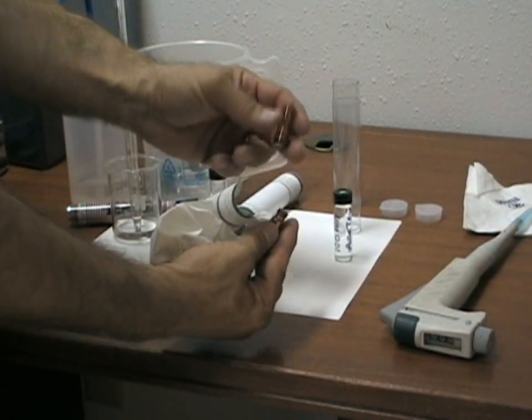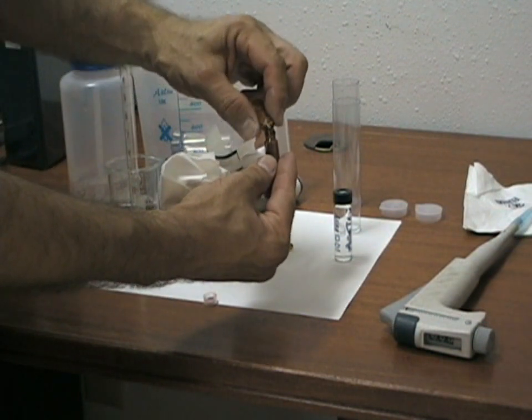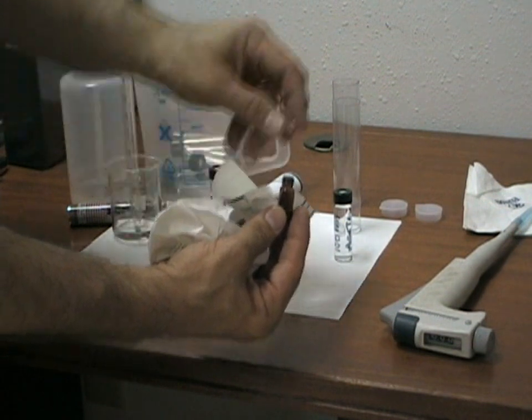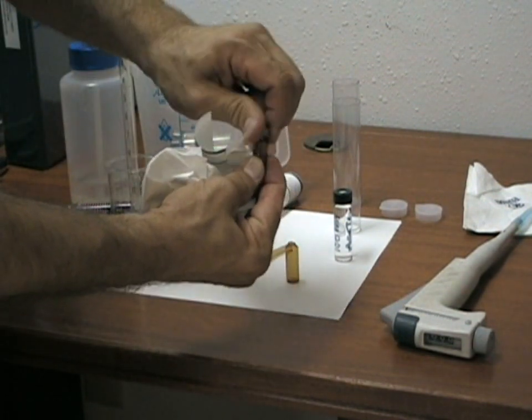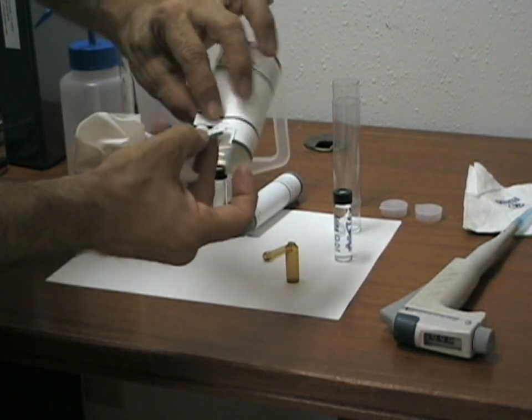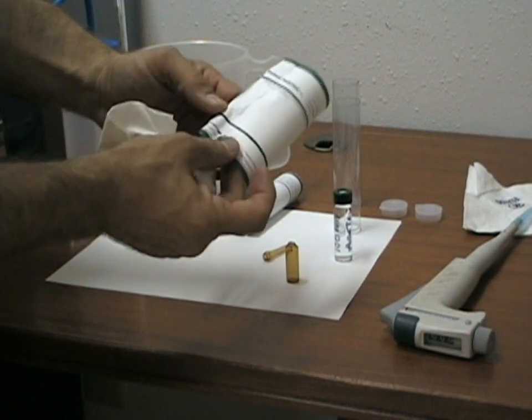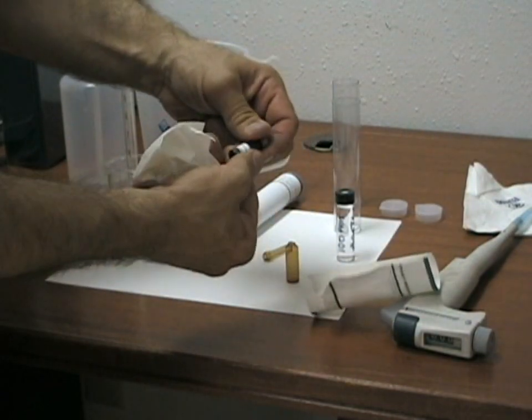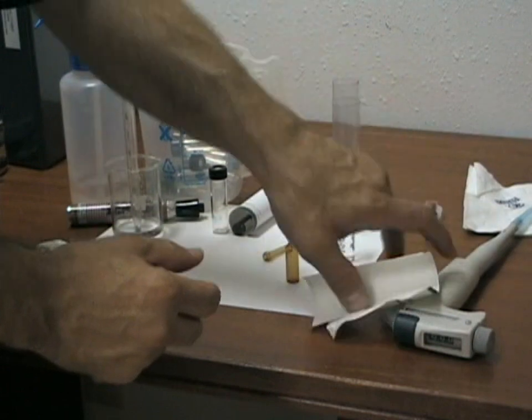You can also pour the remaining half milliliter of the concentrated standard into the small screw cap vial and again keep in the refrigerator for future use. A small label is included and comments can be made on the vial as well.